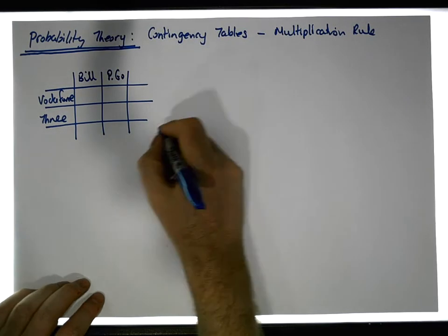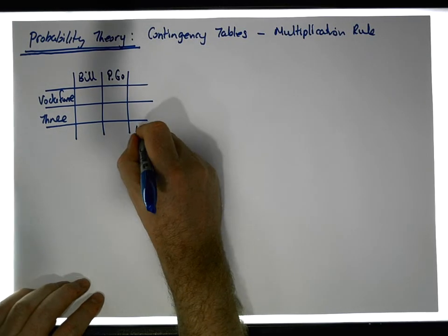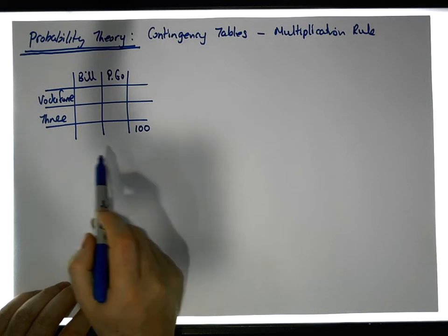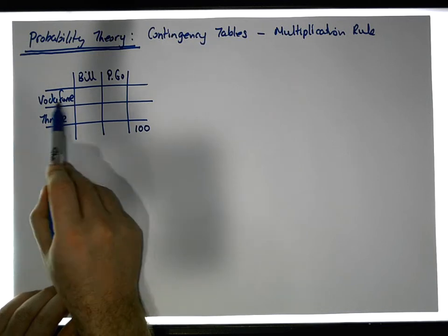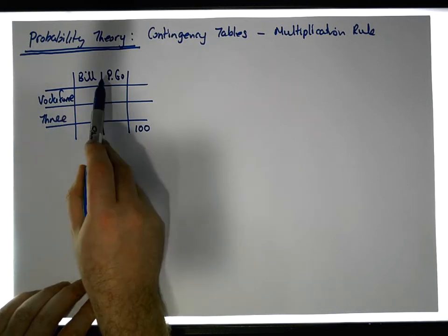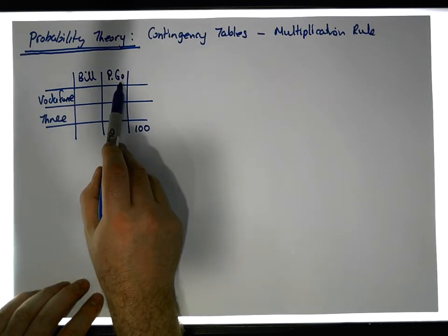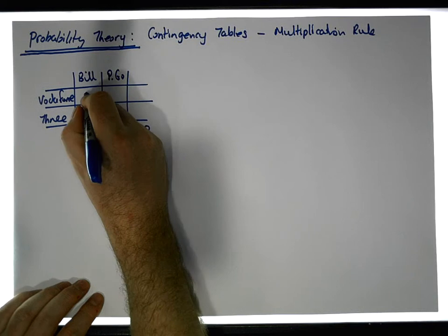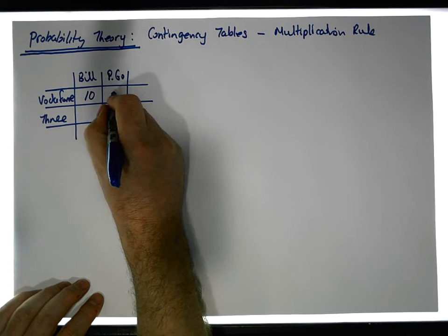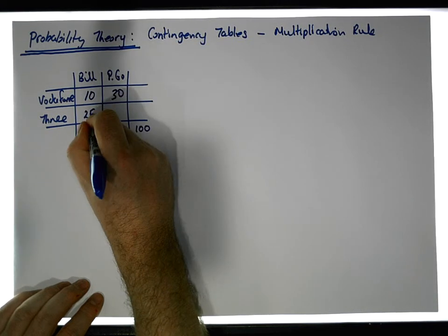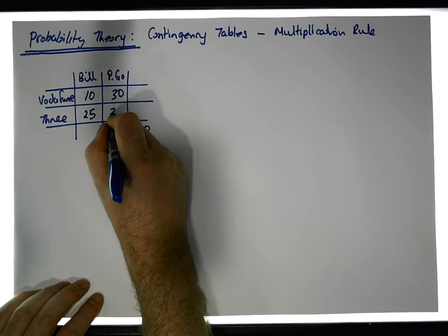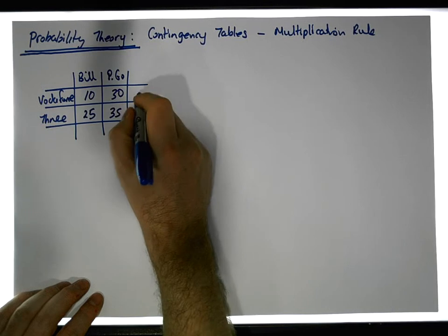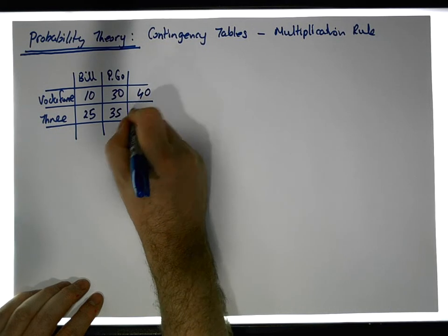Let's say we asked 100 people: what service provider are you with, and what type of plan are you on — bill pay or pay-as-you-go? For argument's sake, the numbers are 10, 30, 25, and 45.